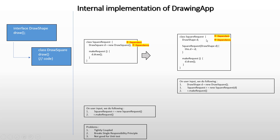One thing to notice here is that SquareRequest is the dependent and DrawShape is the dependency, because SquareRequest, to do some logic inside makeRequest, depends on DrawShape. Hence SquareRequest is a dependent and DrawShape is a dependency.